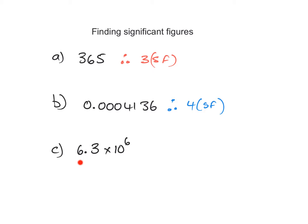The last one we're going to look at is scientific notation. The important thing here is to realise that we don't need to concern ourselves too much about that — these over here are our significant figures, with the first significant figure to the left of the decimal point. So we'll have 1, 2, and therefore we have two significant figures.